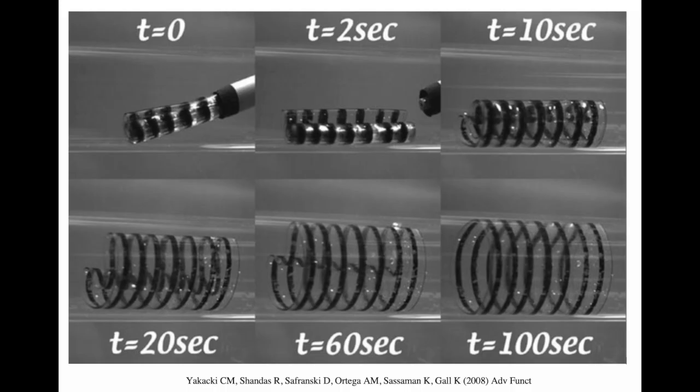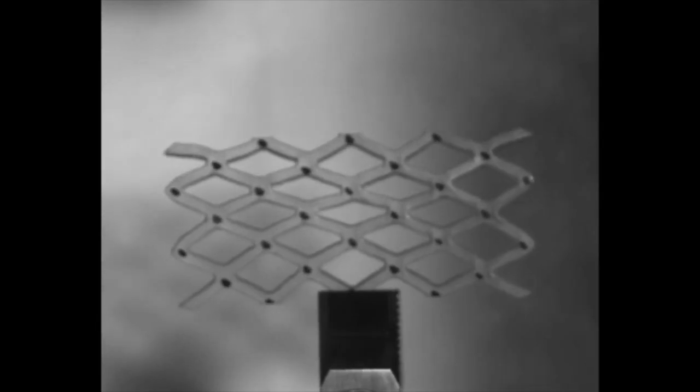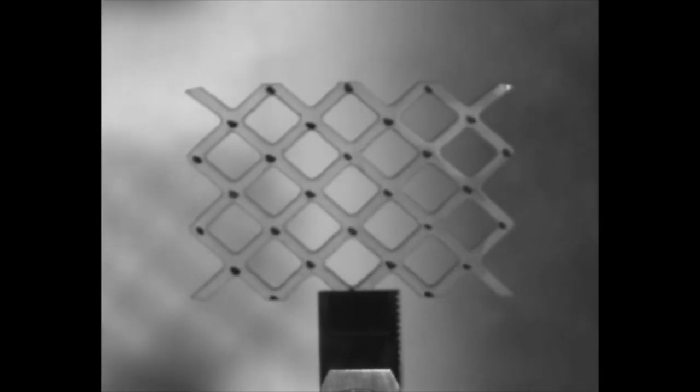However, for shape memory polymer-based stent, the TG of the polymer has been tuned around human body temperature. After it is inserted into the vessel, the stent will be gradually heated up to TG, then it will experience shape change and actively support the vessel walls.